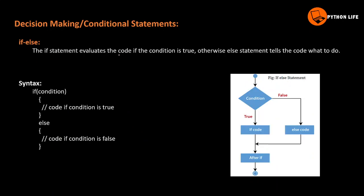This is the if statement. The if statement evaluates the code if the condition is true. Otherwise, the else statement tells the code what to do. If the condition is true, the if code block executes; if the condition is false, the else block executes. These are two types. We will have examples with them.